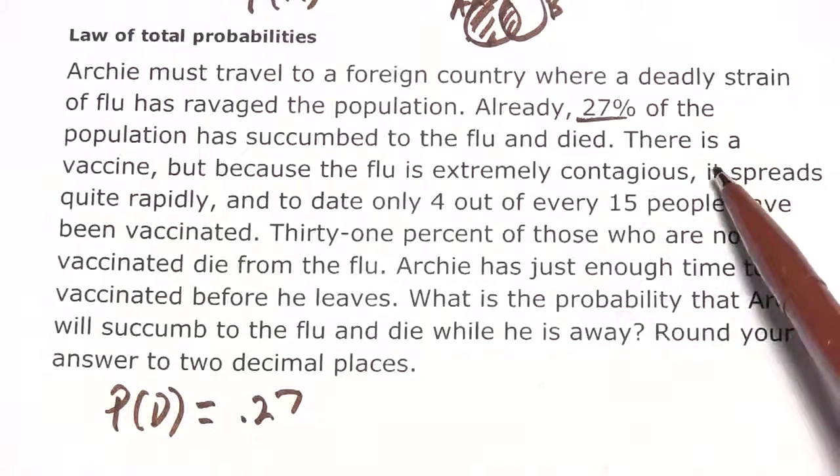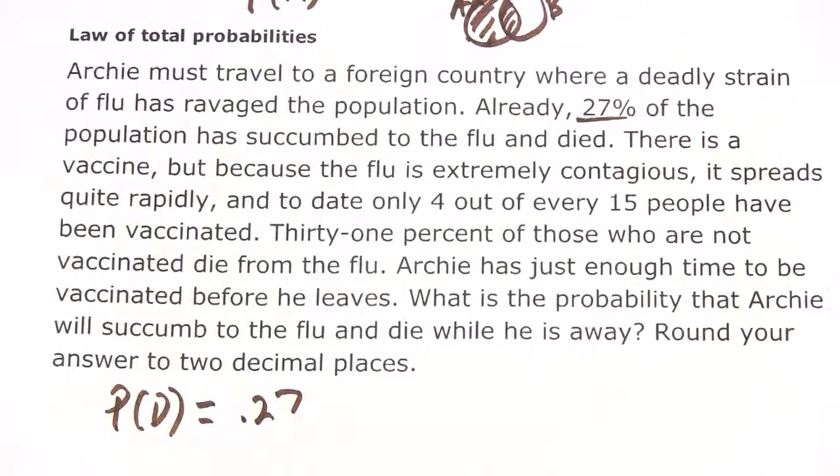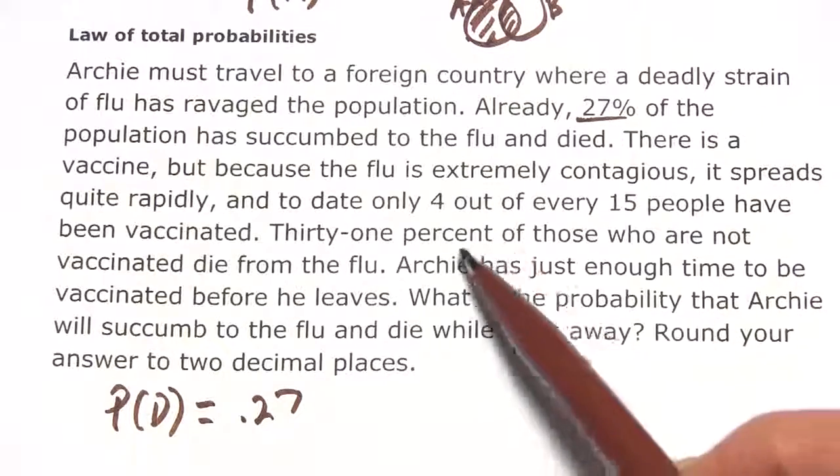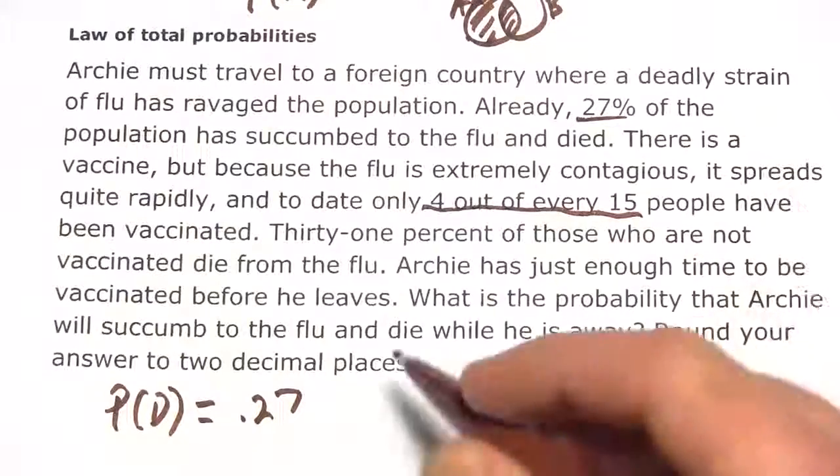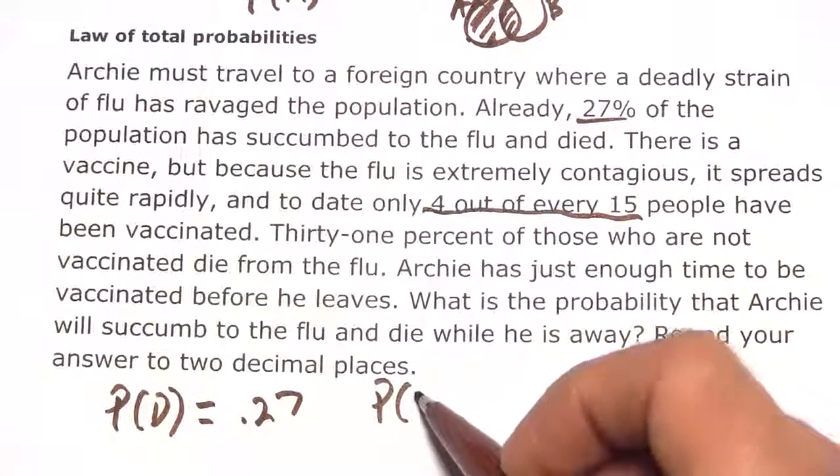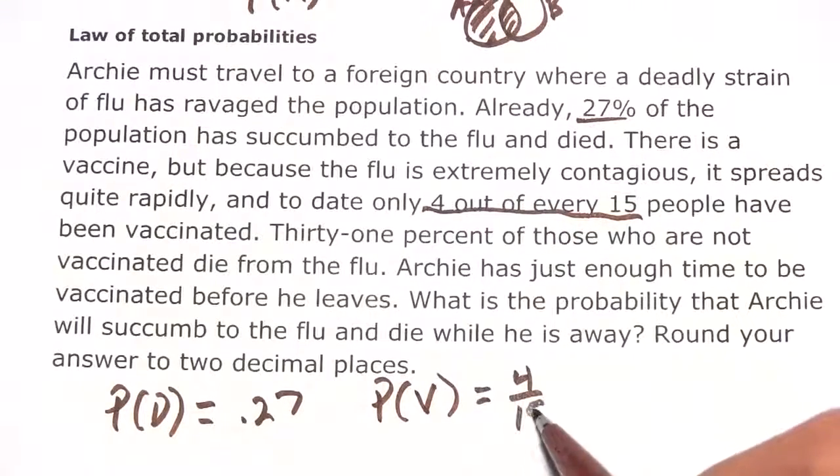Let's read on. There is a vaccine, but because the flu is extremely contagious, it spreads quite rapidly and to date, only 4 out of every 15 people have been vaccinated. That's another probability. The probability of being vaccinated, I'll call that P(V), is 4 out of 15.